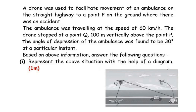The first question asks us to represent the above situation with the help of a diagram. We have been given a situation where there is an accident at point P and a drone has been dispatched. The drone is facilitating the movement of an ambulance moving towards point P. The speed of the ambulance is 60 km/h, the drone stops at point Q which is vertically 100 meters above P, and the angle of depression when it looks at the ambulance is 30 degrees. We need to represent this through a diagram.